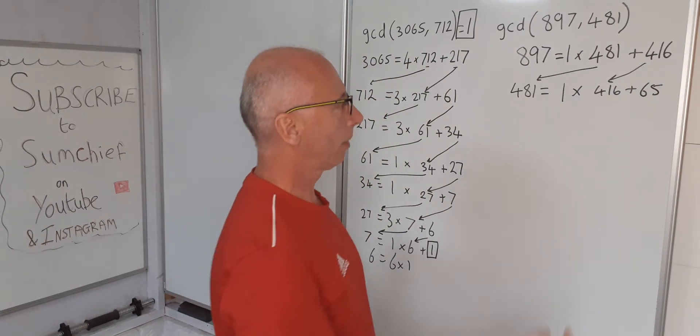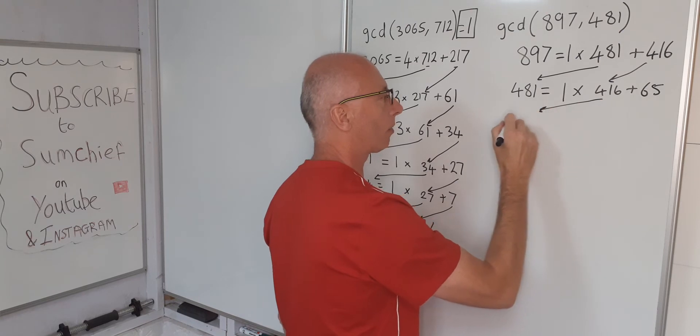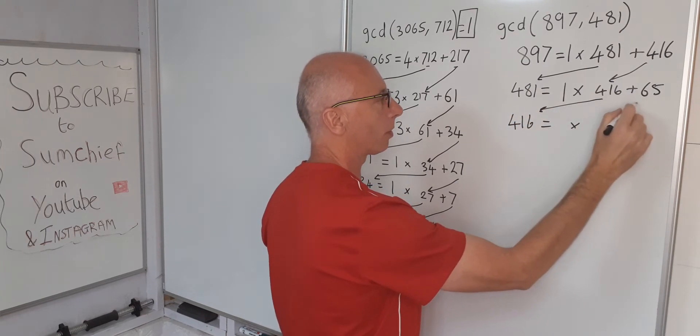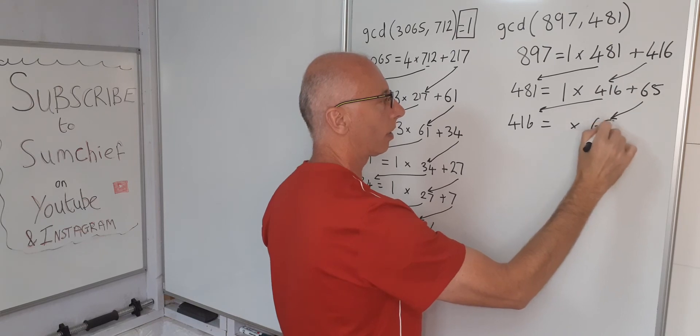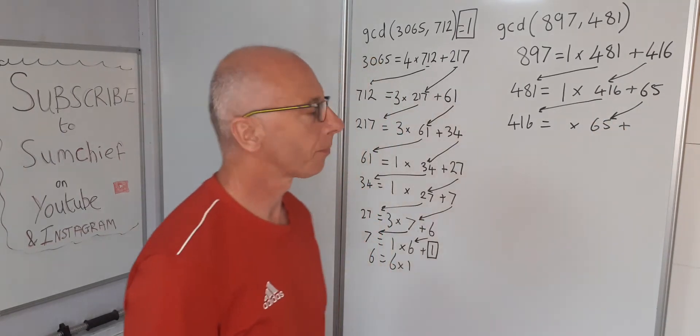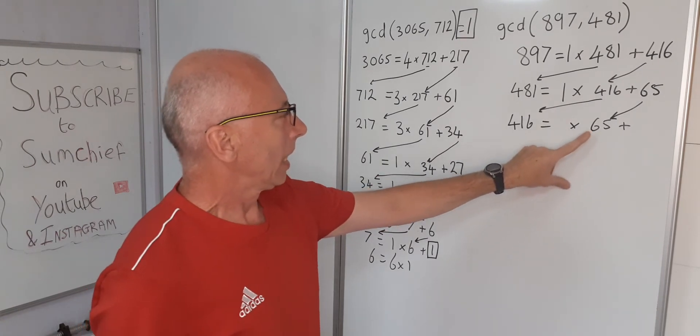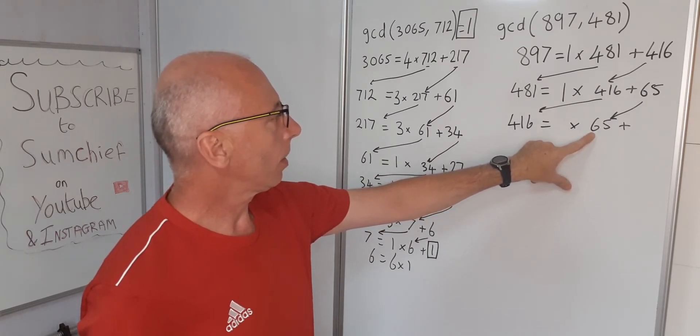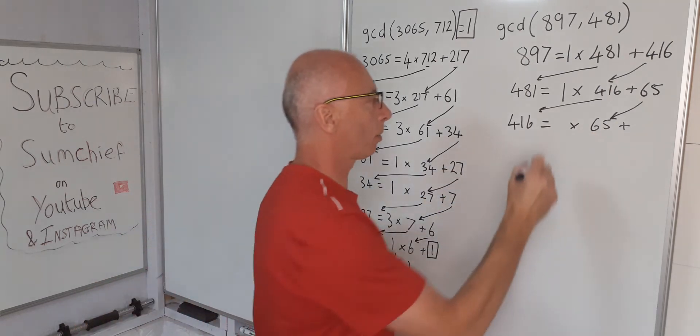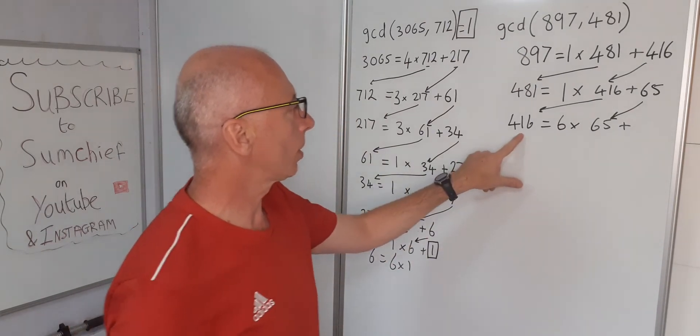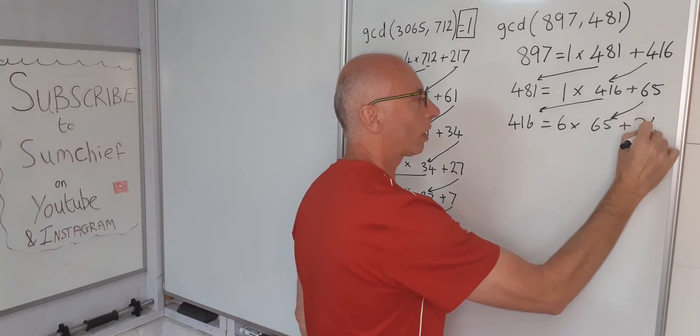Carry on. 416 brought out front equals something times the 65 with a remainder. 65 times 6 is 390, so it's going to be 6. 390 off 416 leaves us with 26.